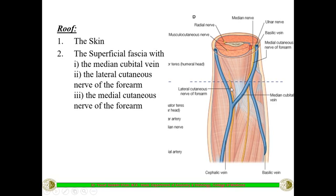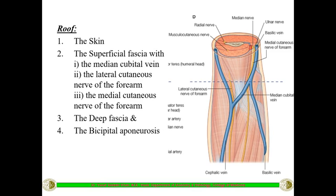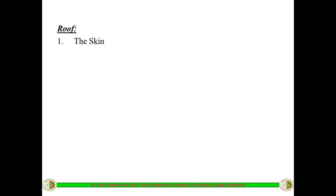The lateral cutaneous nerve of the forearm is the continuation of the musculocutaneous nerve of the arm, becoming cutaneous and supplying the skin of the forearm. On the medial side is the medial cutaneous nerve of the forearm. Deep to the superficial fascia is the deep fascia along with the bicipital aponeurosis — the other part of the biceps brachii insertion, which spreads into the deep fascia.